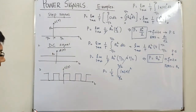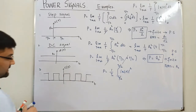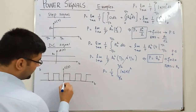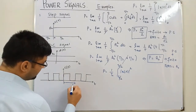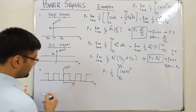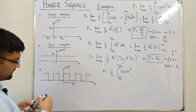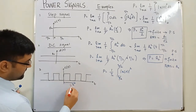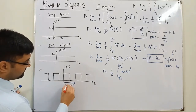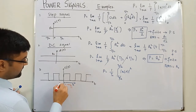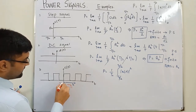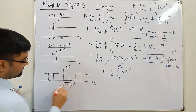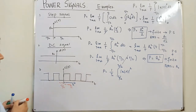T₀ is the full period from one point to the equivalent next point. T₀/2 is half the period, shown in red, and −T₀/2 is the negative half, shown similarly. These are our integration limits.